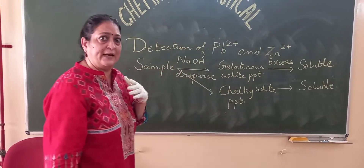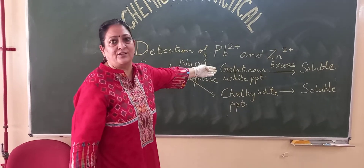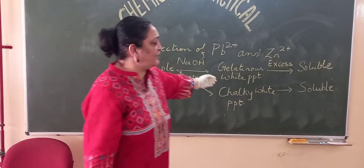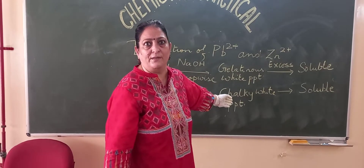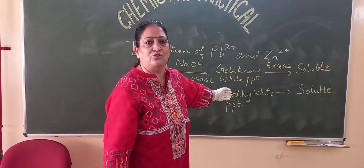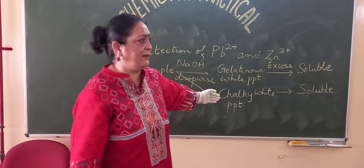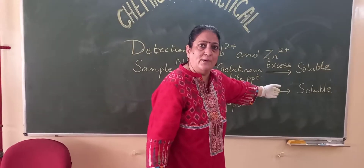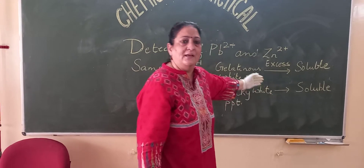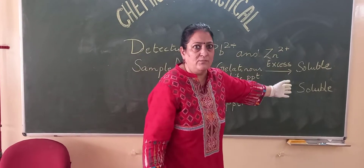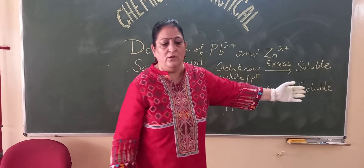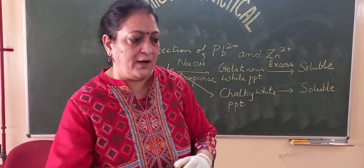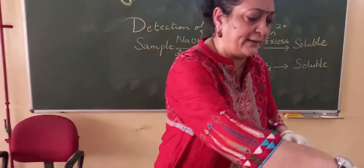Similarly, if it is lead ions, we will not get a gelatinous white precipitate — we will get a chalky white precipitate. When we add NaOH in excess, this chalky white precipitate becomes soluble. What happens with NH4OH, I will come to that later.